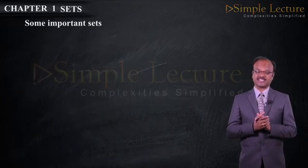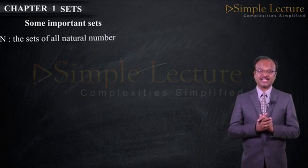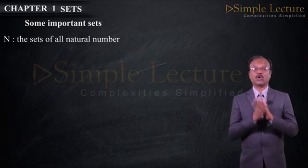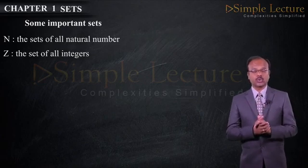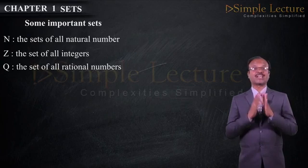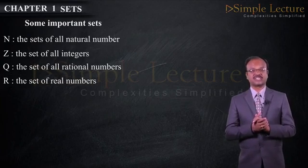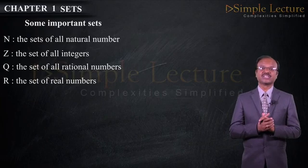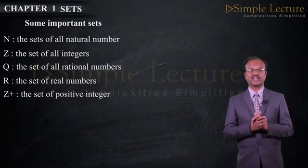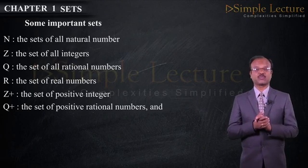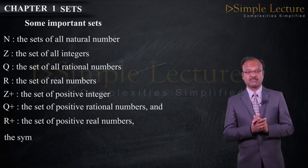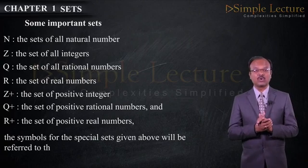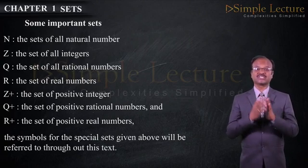Some important sets: N represents the set of all natural numbers, Z represents the set of all integers, Q represents the set of all rational numbers, R represents the set of real numbers, Z⁺ represents the set of positive integers, Q⁺ represents the set of positive rational numbers and R⁺ represents the set of positive real numbers. The symbols for the special sets given above will be referred to throughout this chapter.